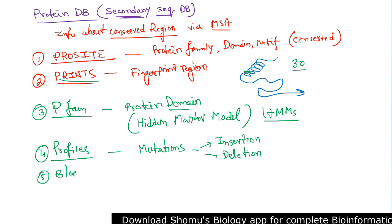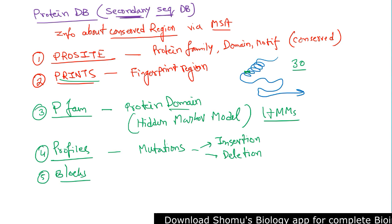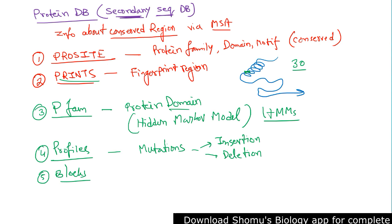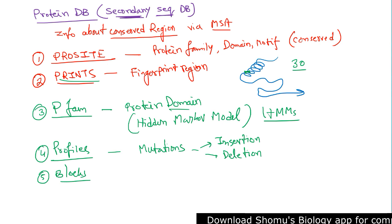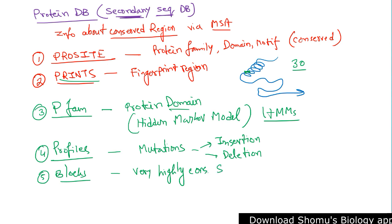There are also BLOCKS — a motif database. BLOCKS is a database of information regarding proteins; whenever there is a very highly conserved region in a protein family, for example the immunoglobulin family of proteins, the very highly conserved sequence or conserved region found among them is shared with the BLOCKS database.